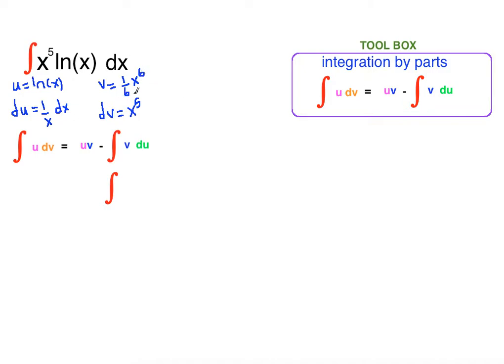So if you differentiate this, you get x to the fifth back. Let's apply integration by parts formula: u times v minus integral of v du.